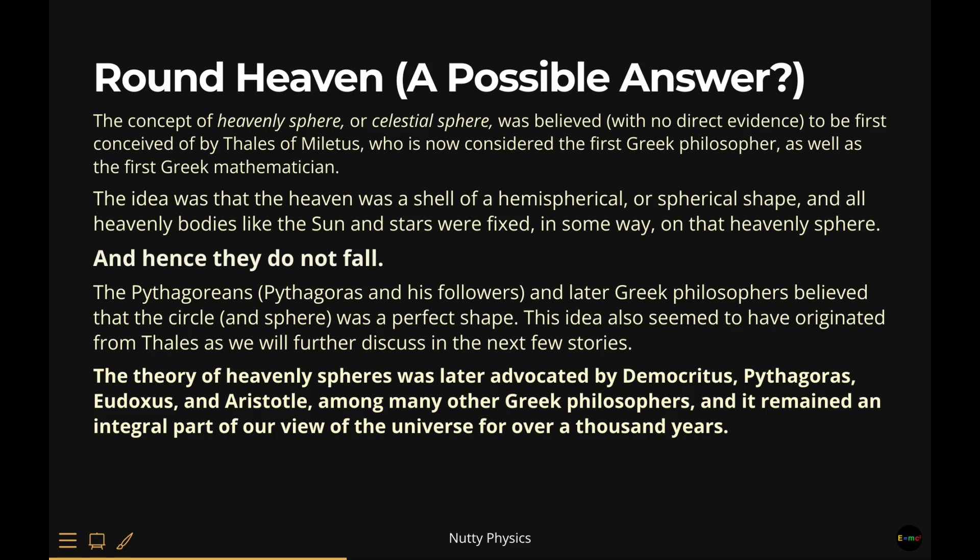Later philosophers such as Democritus, Pythagoras, Eudoxus, and Aristotle, as well as Ptolemy in the second century, among many other Greek philosophers, advocated and improved this concept, and it remained an integral part of our view of the universe for over a thousand years. Incidentally, the Pythagoreans, Pythagoras and his followers, and later Greek philosophers believed that the circle and the sphere was a perfect shape. This idea also seemed to have originated from Thales, as we will see in the next few stories.